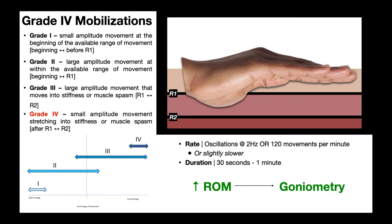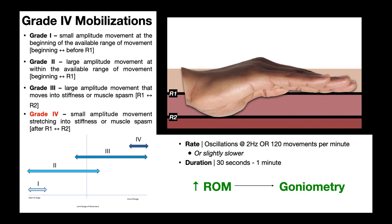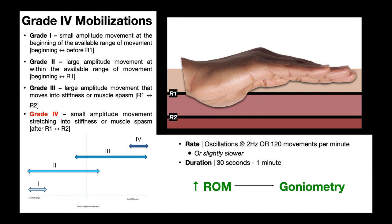Grade four mobilizations are really oscillating right around that end range, right around R2. The start point is going to be somewhere after R1 — so between R1 and R2 — and then the end of the mobilization is right around R2, the end range. The oscillations are right near that end range, and they're small amplitude because they don't cover that whole distance from R1 to R2. They start about the halfway point between them and go just up to R2 and back.